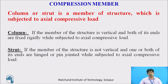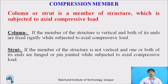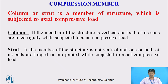What is a compression member, column, or strut? These are the members in a structure which are subjected to axial compressive load. A column is a structure which is vertical with both ends fixed and subjected to axial compressive load. A strut is a member which is not vertical and one or both of its ends are hinged or pin-jointed, also subjected to axial compressive load.